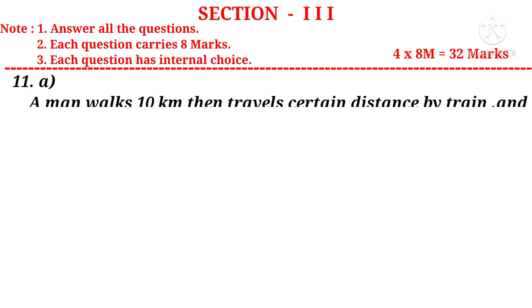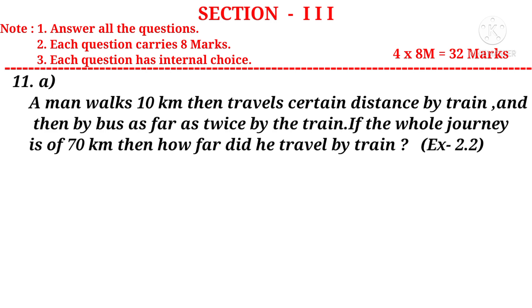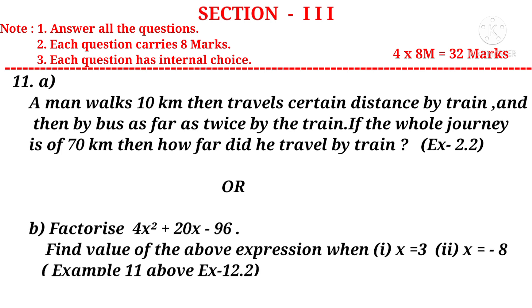Question 11(a): A man walks 10 kilometers then travels a certain distance by train and then by bus as far as twice by the train. If the whole journey is of 70 kilometers, then how far did he travel by train? It is a question from the 2nd chapter. Or (b), factorize 4x^2 + 20x - 96. Find the value of the above expression when (i) x = 3, (ii) x = -8. It is a question from the 12th chapter.